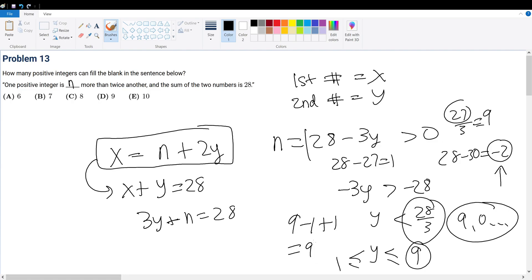So 9 minus 1 plus 1 gives you 9. That's 9 total terms. The answer choice is answer choice D.